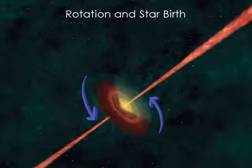Observations of young stars show that their births can be quite violent. There's a rotational component to star birth that causes some interesting phenomena, like enormous jets of gas that shoot off from just-formed stars.